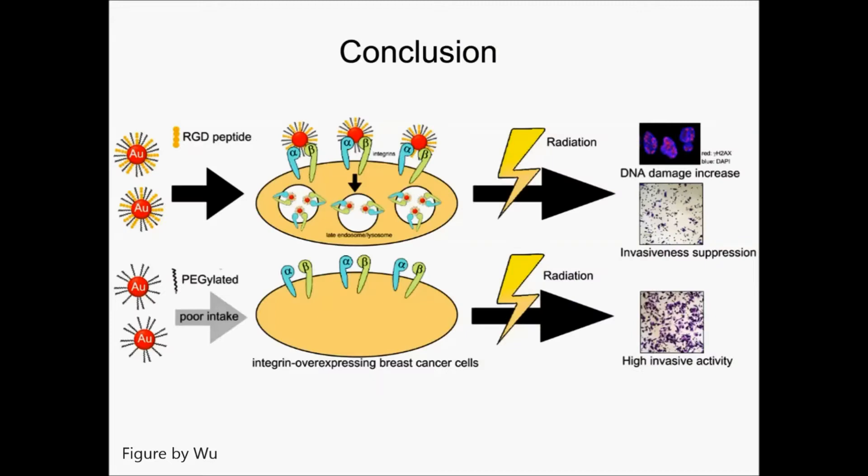In conclusion, our study suggests that RGD-conjugated gold nanoparticles can target integrin-overexpressing cancer cells to improve radiotherapy by increasing radiosensitivity and suppressing invasive activity.